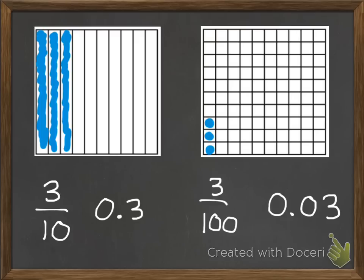In decimals, we would write this like this. We don't have any wholes. We don't have a whole row of ten filled up. All we have are three in our hundredths spot.